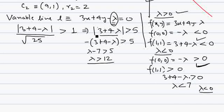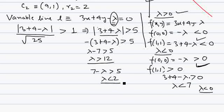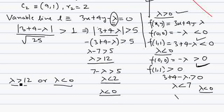Since 7 − lambda is positive, we can remove the modulus: 7 − lambda greater than 5 gives lambda less than 2. The common part with lambda less than 0 is lambda less than 0. So we are getting lambda less than 0 as a second case. For this circle to not intersect or touch the line, we have two cases: lambda greater than 12 or lambda less than 0. Now we will similarly consider the second circle.